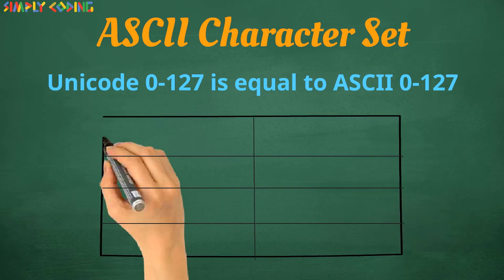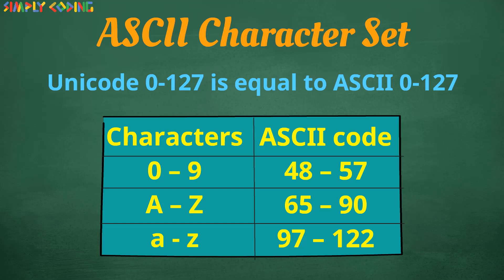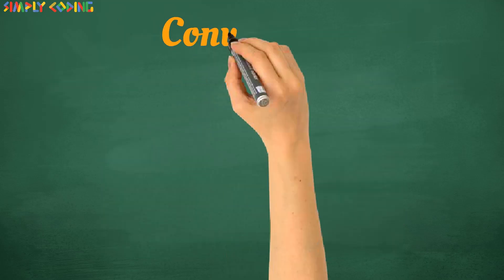You need to learn the codes for English alphabets and digits as you can expect questions around it. Numbers 0 to 9 have ASCII code from 48 to 57, capital A to Z is from 65 to 90 and small a to z is from 97 to 122.